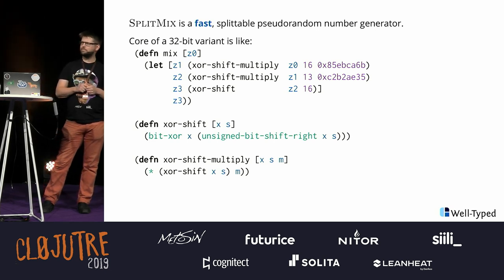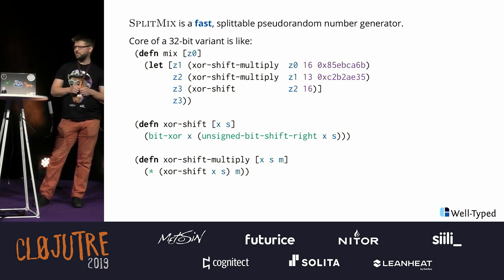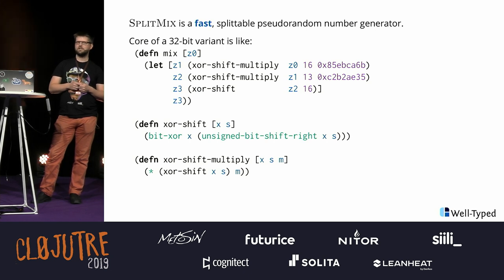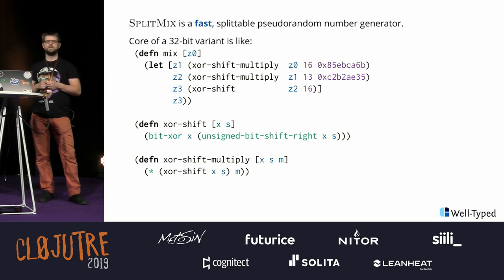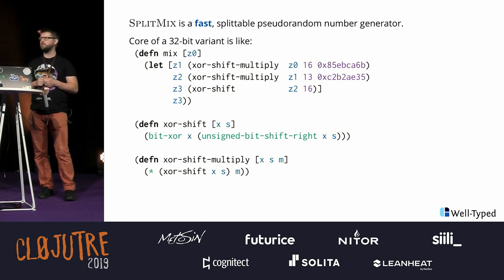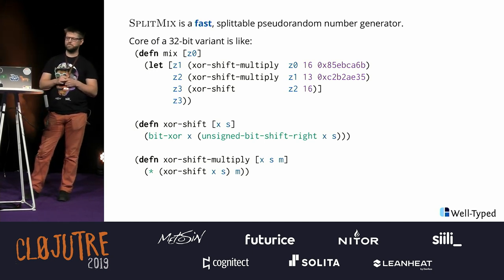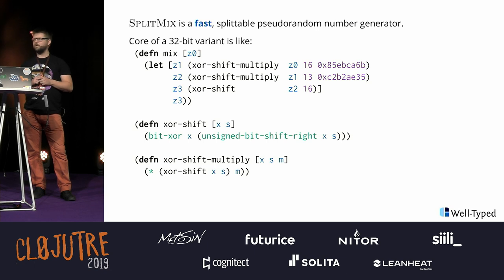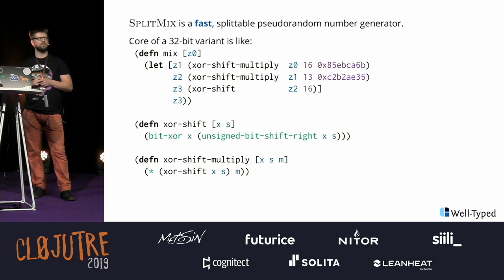It's also splittable. Splittable means it's good for functional programs — you can read about that on the internet — but we'll concentrate on the fast aspect. How the algorithm works: there's a seed which you increase by addition — that's one operation — and then you have eight operations: XOR shift, multiply, XOR shift, multiply, and XOR shift once again, to make it look random. Then you have magic numbers picked in some magic way, but the output will look random. It's very simple.